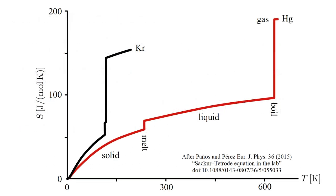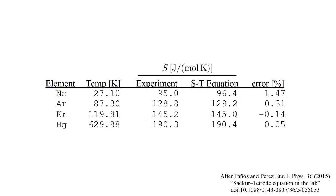In video five of this series, we derive the Sacher-Tetrode equation, which gives the absolute entropy of a monatomic gas. Experimentally, absolute entropy is determined by starting with the assumption of zero entropy at zero temperature, consistent with Planck's statement of the third law. Then experimental entropy increases are summed from zero to the temperature of interest. The excellent agreement between experiment and the predictions of the Sacher-Tetrode equation confirm the validity of the assumption of zero entropy at zero temperature.